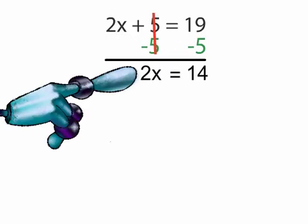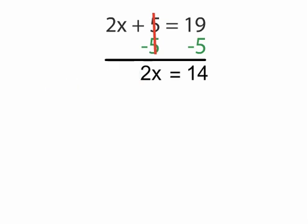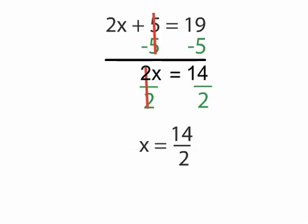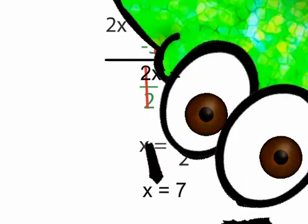To get rid of the 2 in front of the x, we can divide both sides by 2. This leaves us with x equals 14 over 2. 2 goes into 14 seven times, so our final answer simplifies to x equals 7.